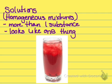Solutions, also called homogeneous mixtures, are made up of more than one substance, but you cannot see the different parts. Homogeneous means to look like the same thing. Kool-aid is an example of a homogeneous mixture or a solution because it's made up of sugar, water, and food coloring, but it looks like one substance and you can't see the different parts.